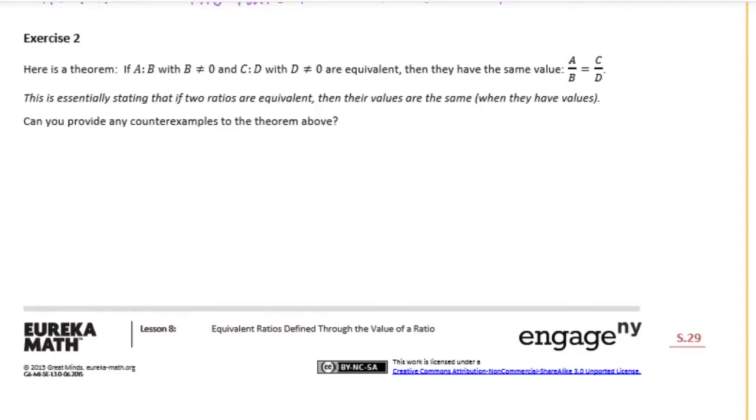Exercise 2. Here's the theorem: If A to B, where B cannot equal 0, and C to D, where D cannot equal 0, are equivalent, then they have the same value. A over B is equal to C over D. This is essentially stating that if two ratios are equivalent, then their values are the same when they have values. Can you provide any counterexamples to the theorem above?